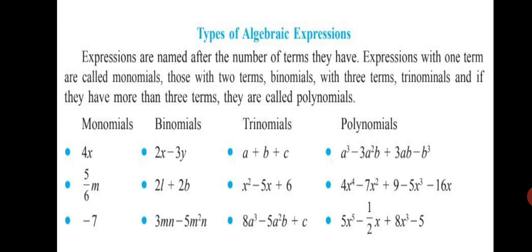So, let's have a look at some examples of monomials. 4x, you will see only one term, 5 upon 6m minus 7. These are all monomials. Binomials, you will see there are two terms, like 2x minus 3y, 2l plus 2b, 3mn minus 5m square n. So, you will see two terms are there and there is an operation sign in between them.